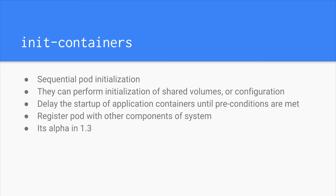Let's look at what init containers are in Kubernetes. Init containers are similar to the init system of Linux but for your application pods. If you want to do some configuration setup for your application to run, you can define those tasks in init containers. It's also called sequential pod initialization — they can perform initialization of shared volumes and configuration, and delay startup of your application container until all init containers run successfully. You can also do things like register your pod components with a system.